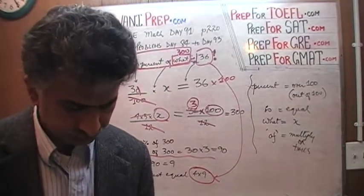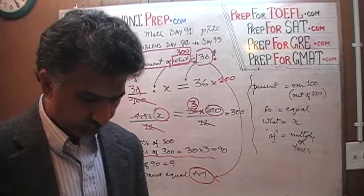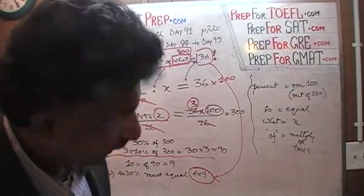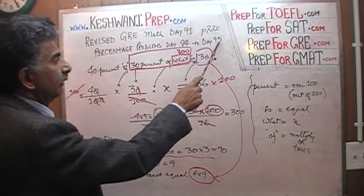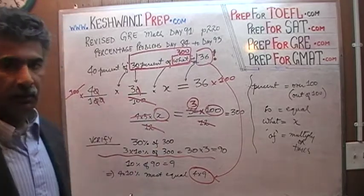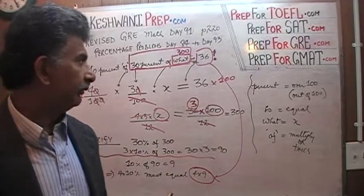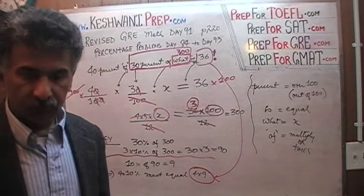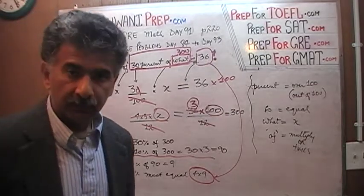That's all — we are done. Tomorrow we are going to do a few more percentage problems. As you can see on the blackboard, I intend to go for 2 more days — day 93 is going to be the last day, giving us an even 10 days of percentage problems. I will see you tomorrow. Bye now.